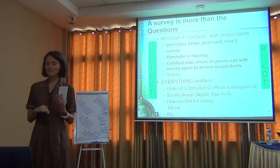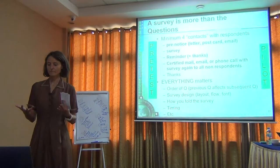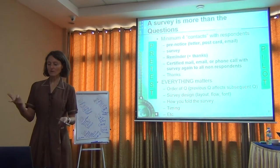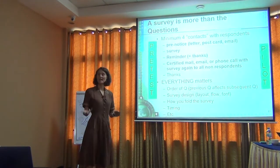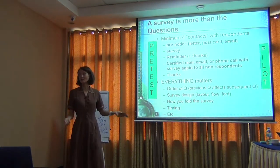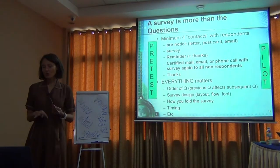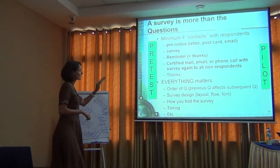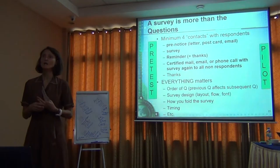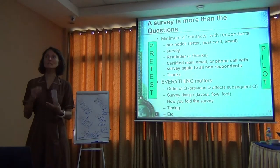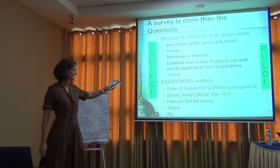The second contact is actually mailing the survey, dropping it off, or sending it via email with a link. The third contact is typically a thank-you note for those who have taken the survey, but a reminder to those who haven't. The fourth contact is usually certified mail or a more sternly worded message saying please take the survey — this is really important for our research. The final contact is a thank-you.